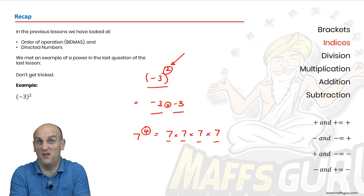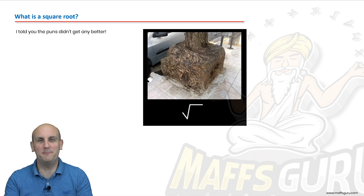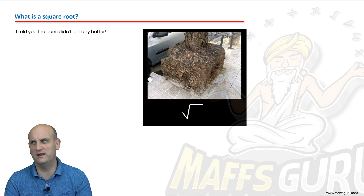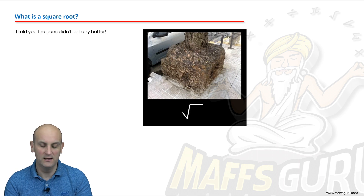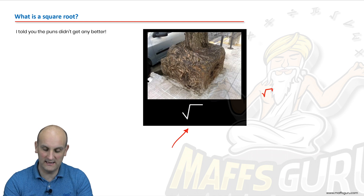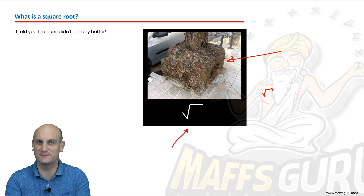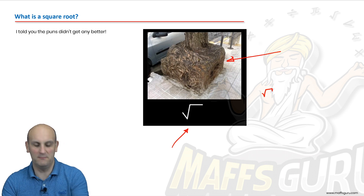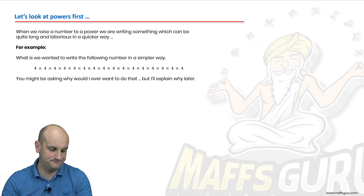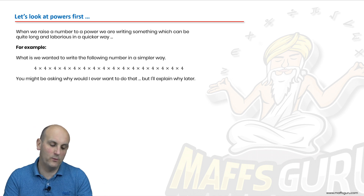On the whole, that's what we're going to learn. What is the square root? The puns don't get any better — I think I ran out. There is a square root sign mathematically, and yes, the tree has got square roots — I think I'm laboring this. Alright, let's look at powers first. When we raise a number to a power, we are writing something which can be quite long and laborious but in a quicker way.